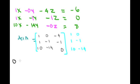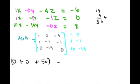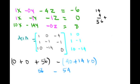We find the determinant by recopying the first two columns and multiplying the diagonals. The positive diagonals give: 1×(−1)×0 = 0, plus 0×(−1)×10 = 0, plus (−14)×(−4)×1 = 56. So the positive sum is 56.